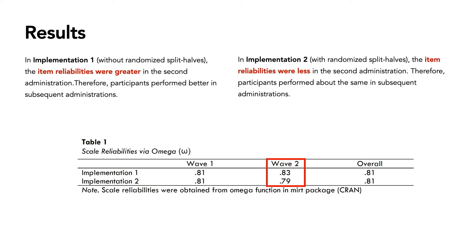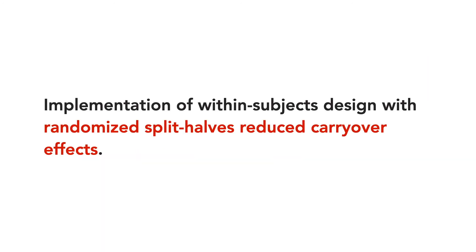Looking at the table, highlighted in red: for implementation one, we started with 0.81 reliability for both scales — the traditional one and the randomized split halves — and ended with the same overall. However, in wave one they both start at 0.81, but for wave two, the traditional implementation's reliability actually increases, and we believe that indicates carryover. Therefore, we believe that the implementation of the within-subject design with randomized split halves did reduce carryover as opposed to the traditional implementation.